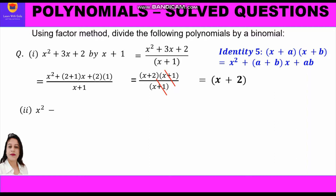Now let us take up question number 2. It is given: divide x squared minus 7x minus 18 by x minus 9. First of all, we shall write in fraction form, keeping the dividend in the numerator and divisor in the denominator: (x² - 7x - 18) upon (x - 9). We shall factorize the numerator using identity 5.